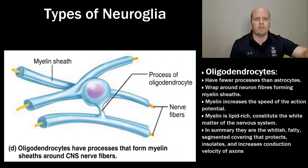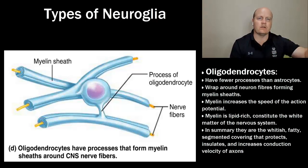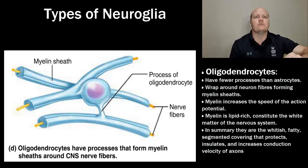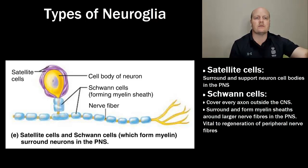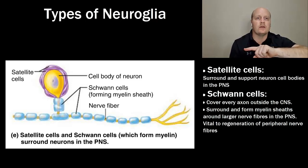Oligodendrocytes wrap around neuron fibers to form a myelin sheath. The myelin sheath is lipid-rich and increases the conduction velocity of axons, meaning nerve impulses travel faster so messages reach their destination quicker. Oligodendrocytes are found in the central nervous system. Satellite cells surround and support neuron cell bodies in the peripheral nervous system. Schwann cells cover every axon outside the central nervous system, surrounding and forming myelin sheaths around large nerve fibers in the peripheral nervous system — that insulation along the axon helps nerves send messages faster.